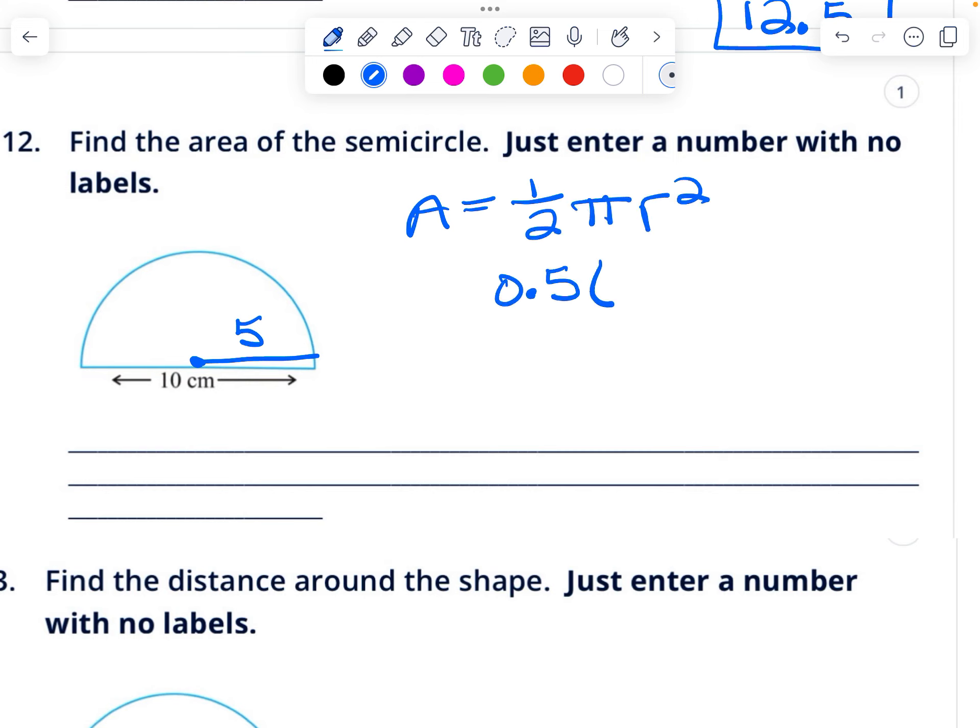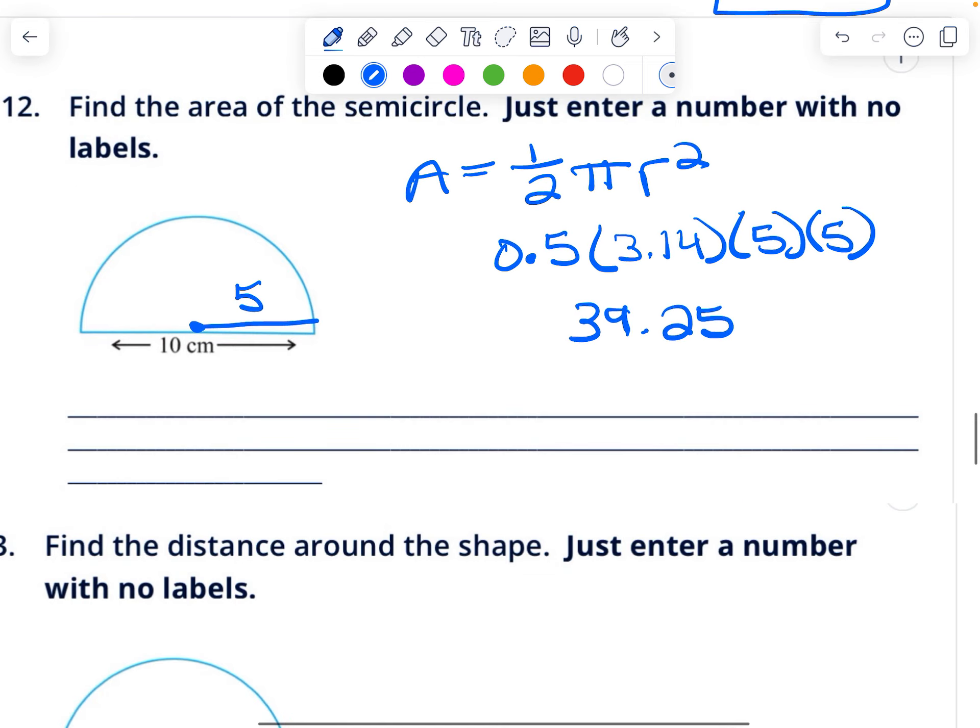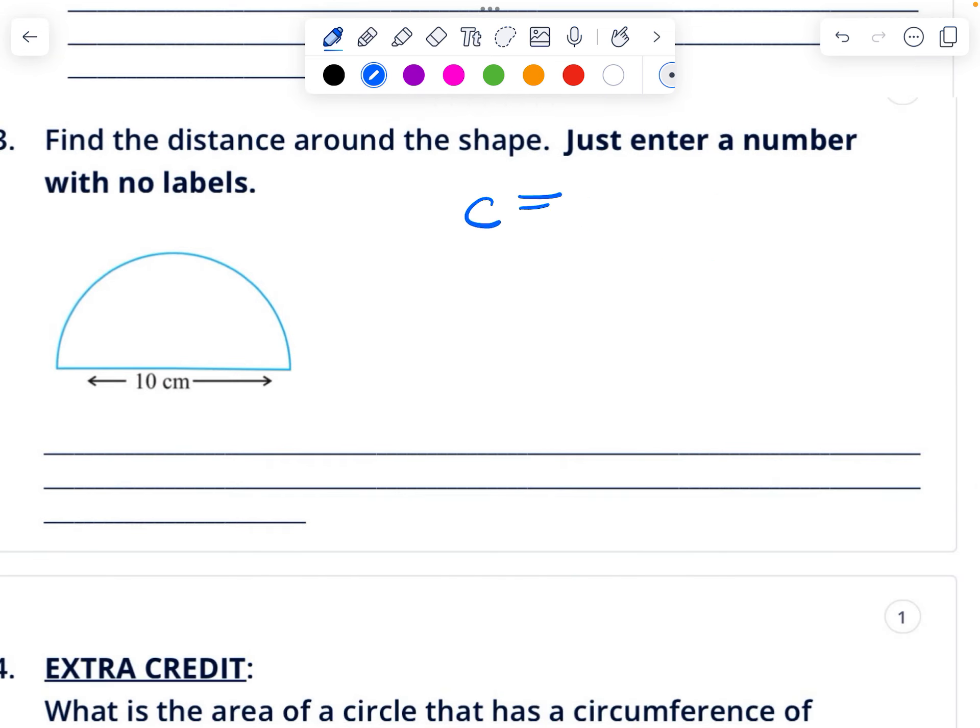To find the distance around this shape, it's going to be half of the circumference. I know circumference is pi times diameter, so this will be half of pi times diameter. But that's only going to give us this distance right here. I want the distance around the whole shape, so I then have to add this straight line, so I'm going to add 10 onto this end. So I'm going to do 0.5 times 3.14 times 10, and that's going to give me 15.7, and then I'm going to add 10 to get 25.7.